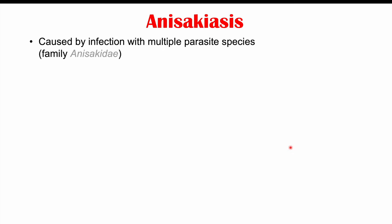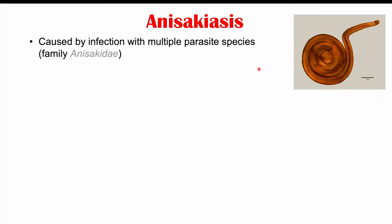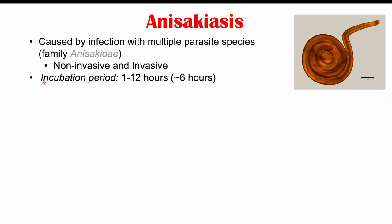Anisakiasis is a condition caused by infection with multiple parasite species of the family Anisakidae. Infections can be non-invasive, meaning localized to the gastrointestinal system, or invasive, meaning the parasites have escaped into other tissues. This infection has a very short incubation period of 1 to 12 hours, with an average of about 6 hours — meaning symptoms can occur very rapidly, in contrast to the other infections discussed earlier.